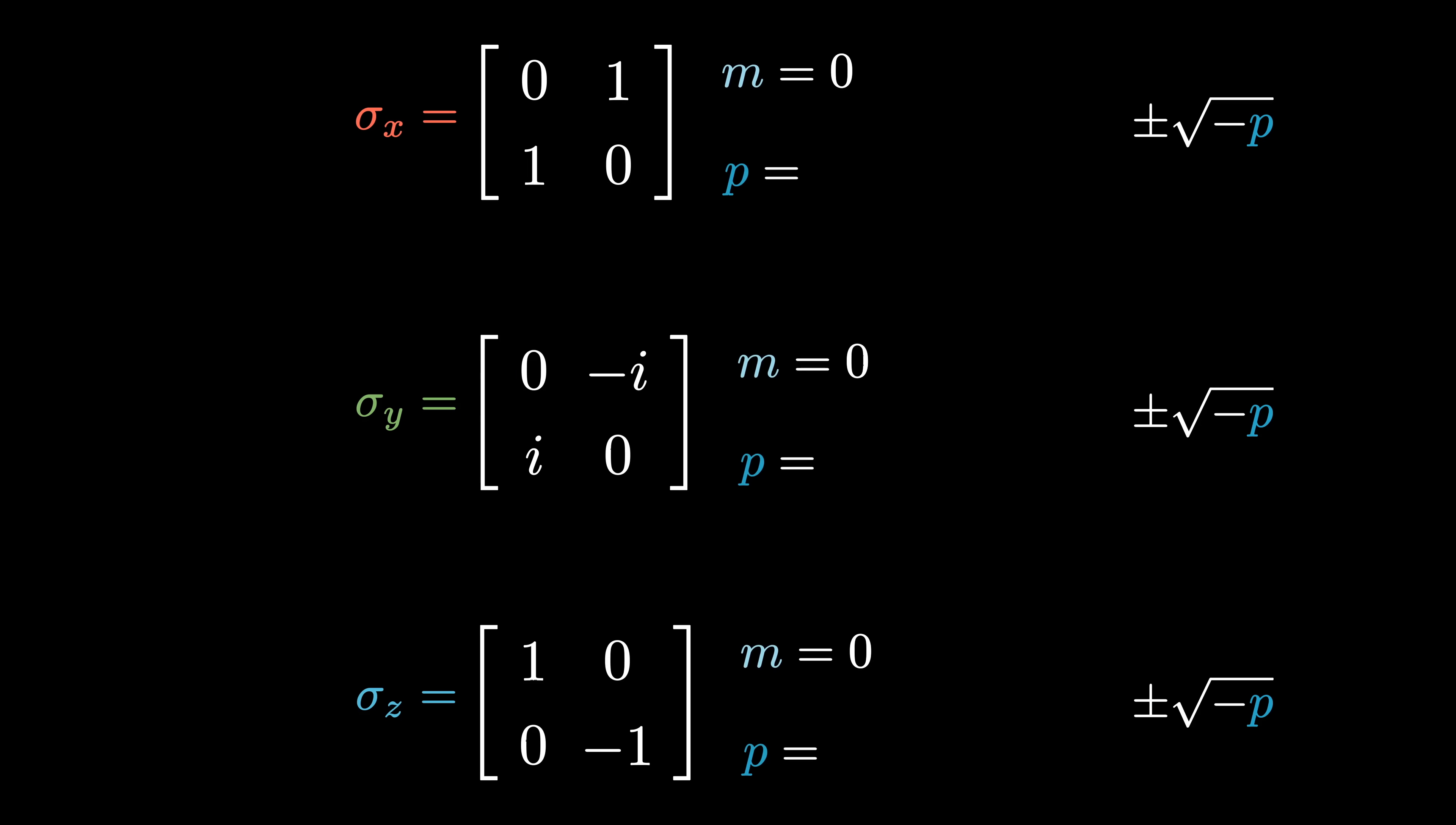What about the products of the eigenvalues, the determinants of these matrices? For the first one, it's zero minus one, or negative one. The second one also looks like zero minus one, but it takes a moment more to see because of the complex numbers. And the final one looks like negative one minus zero. So in all cases, the eigenvalues simplify to be plus and minus one.